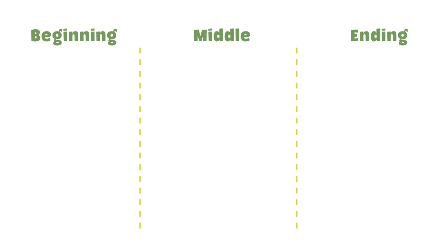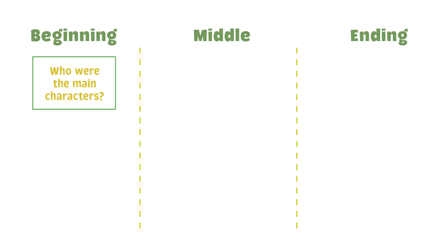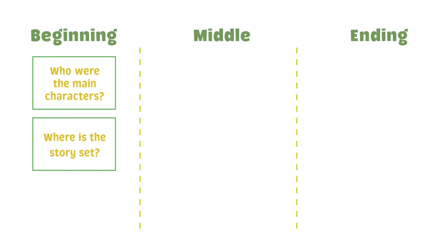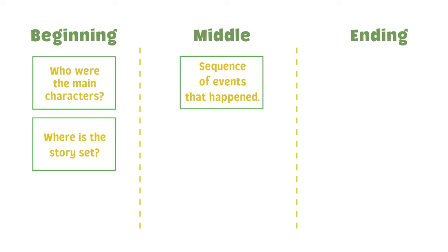The beginning is when we ask: who were the main characters? Where is the story set? The middle part is the sequence in which the events take place.